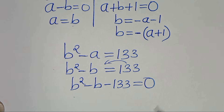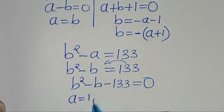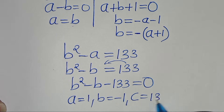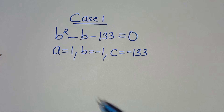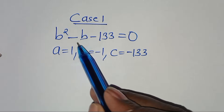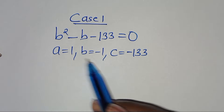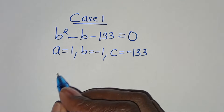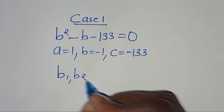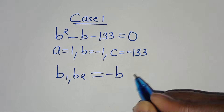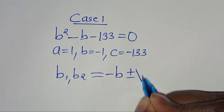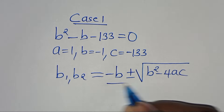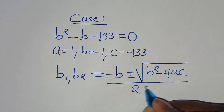This is a quadratic equation where the coefficient a equals 1, b equals negative 1, and c equals negative 1/3. We solve for b1 and b2 by applying the quadratic formula: negative b plus or minus the square root of b squared minus 4ac, everything divided by 2 times a.